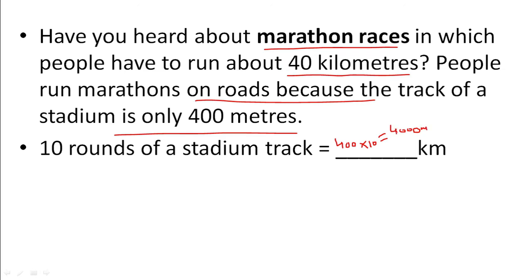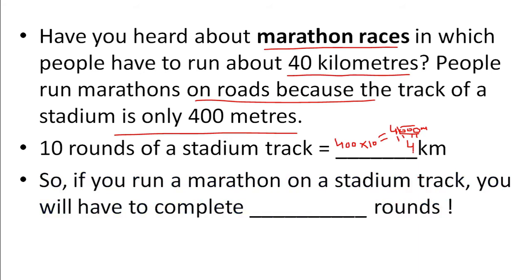4000 meters equals 4 kilometers, so 10 rounds of the stadium is 4 kilometers. Now, if you run a marathon on a stadium track, you need to run 40 kilometers. How many rounds would that be?